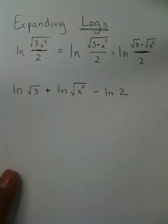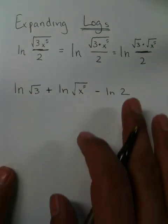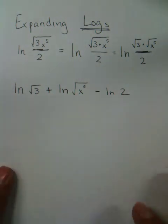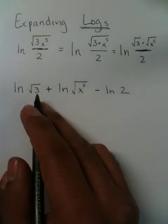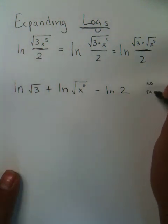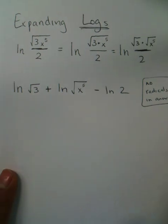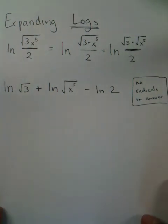Now you have the natural log of two. The reason why this isn't finished is because you're not allowed to have radicals in your expanded log answer. Remember that: no radicals in answer. That's key, you need to focus on that.